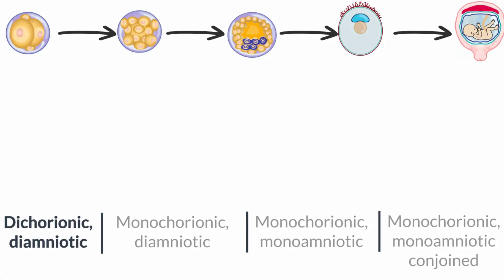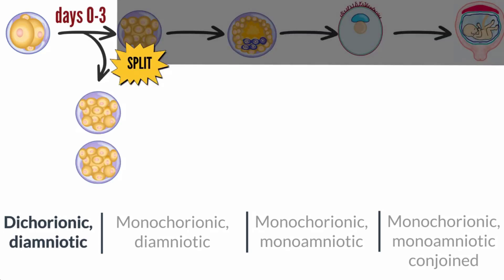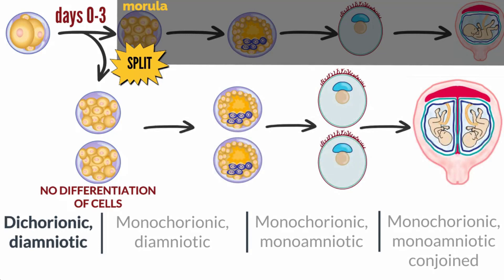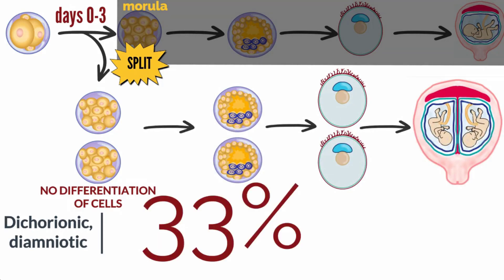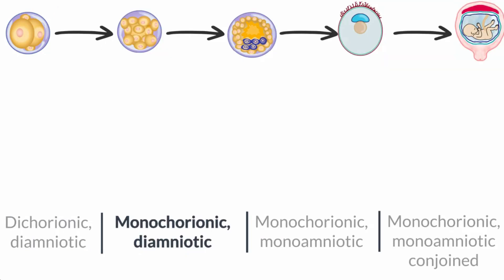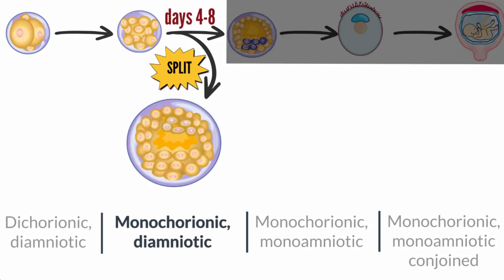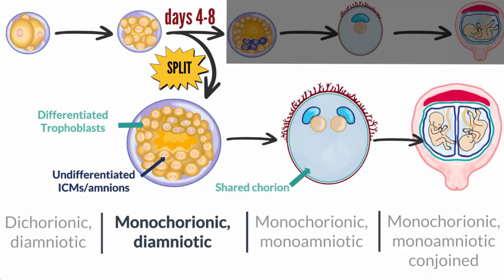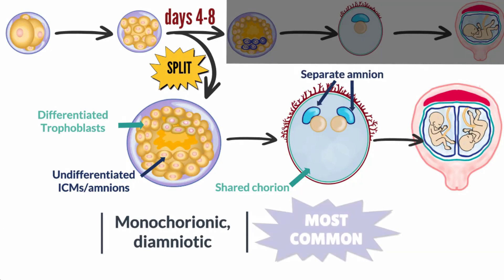Dichorionic-diamniotic twinning occurs when the split happens within the first three days after fertilization, before the morula stage. At this point, there has been no differentiation of the cells, so all structures that develop thereafter are doubled. Di-di twins represent about 33% of monozygotic twin gestations. Monochorionic-diamniotic twinning results when the split occurs between days 4 to 8, after the trophoblasts have differentiated but before the amnion has formed, so there is one shared chorion for the two embryos, each with their own amnion. Monochorionic-diamniotic twins are the most common monozygotic twins, representing 67% of them.